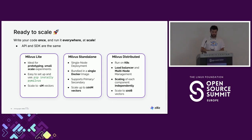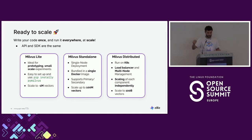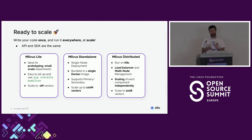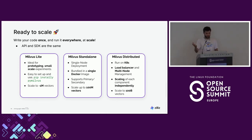Then we have Milvus Standalone, which is a single-node deployment. This one is bundled directly in the Docker image — you just do a Docker pull and run it. We have primary and secondary for this one and it can scale up to about 100 million vectors, which is already a pretty significant scale. And then if you go to really big scale, we have Milvus Distributed, which runs on Kubernetes with a load balancer, supports multi-node management, and scales up to about 100 billion vectors.